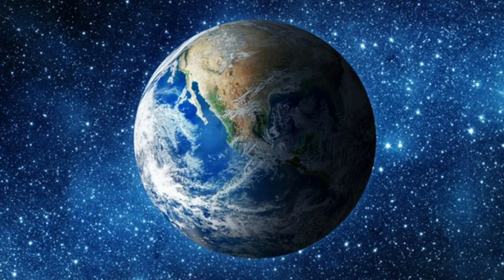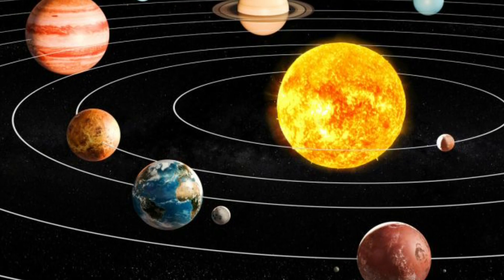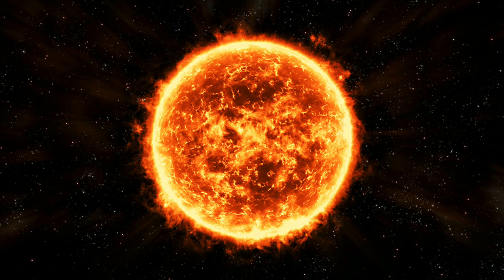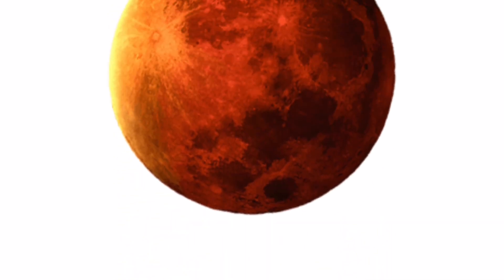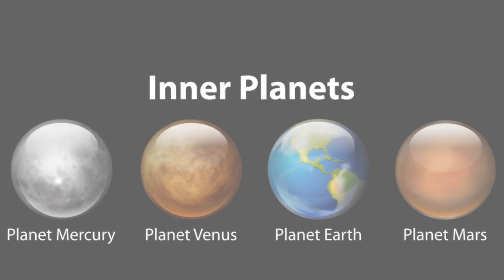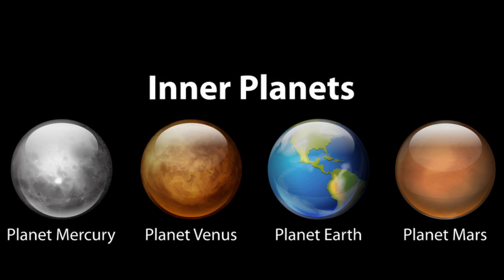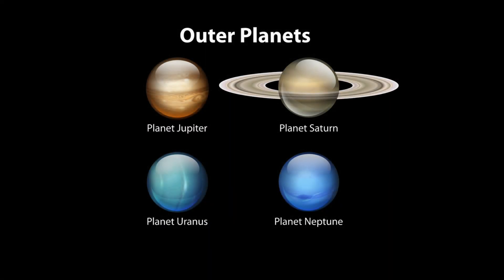Children, we all know about our solar system. It is a family of the Sun and its eight planets. The Sun is the heart, or we can say center, of the solar system. The eight planets orbit around the Sun. They are Mercury, Venus, Earth, Mars, Jupiter, Saturn, Uranus, and Neptune. Mercury, Venus, Earth, and Mars are the inner planets.